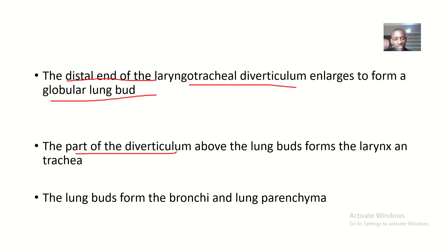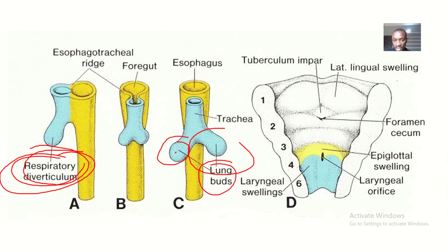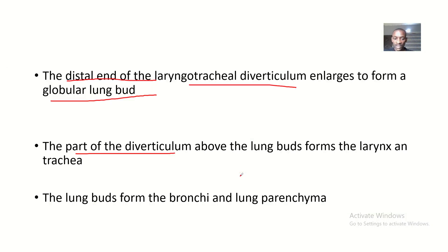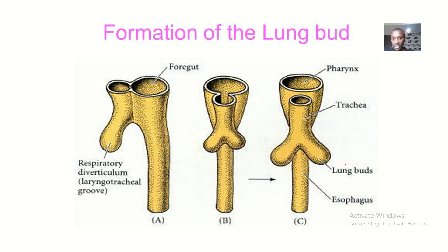The part of the diverticulum above the lung buds will form the larynx and the trachea. You can see this is the trachea, and later on it will also form the larynx. The caudal part will bifurcate and enlarge globularly to form the lung buds, while the upper part forms the trachea and later the larynx.